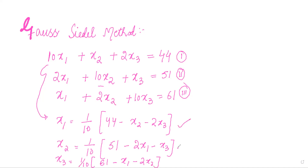We now have three equations for x1, x2, and x3. In the Jacobi method, we assumed x1 equals x2 equals x3 equals some initial value, and then started iterations. But in the Gauss-Seidel method, to find x1, we assume values of x2 and x3, and we use updated values immediately as they are computed.